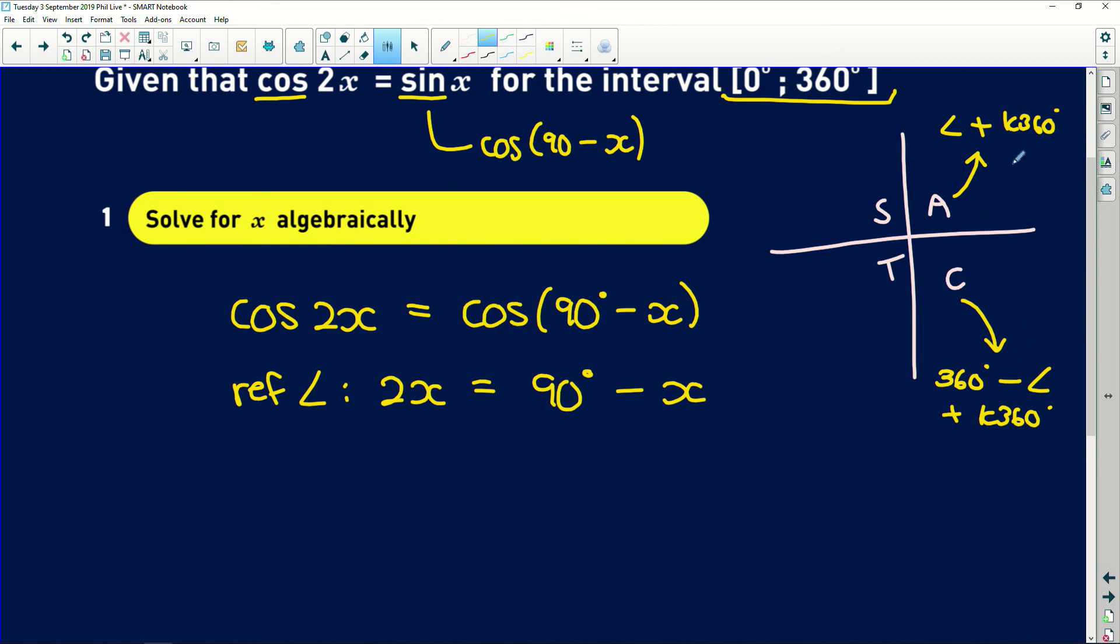So the first one we simply say that 2x is equal to 90 degrees minus x plus k360. Because your graph literally does that. You're going to have the same y value at different parts on the graph.